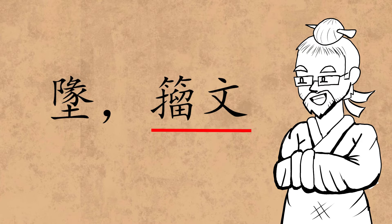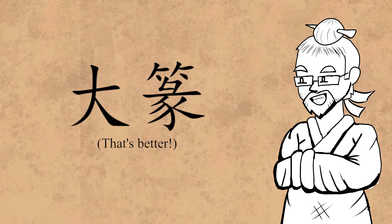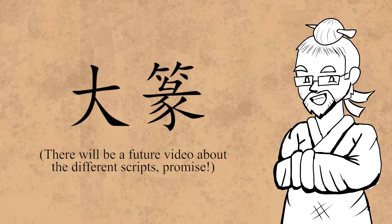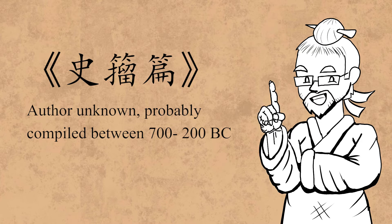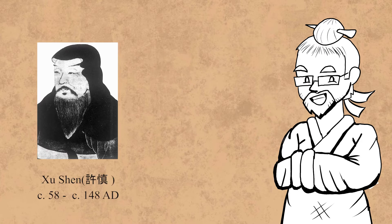First of all, this term is sometimes translated as large seal script. However, this can be a bit misleading, mainly because 'large seal' is sometimes used very broadly to encompass all characters that predate the Han dynasty. The Chinese term 籀文 specifically refers to a group of characters from the book Shizhoupian, a now-lost work written during the Zhou dynasty, to promulgate a standardized script, which remained in use until the collapse of the Qin dynasty.